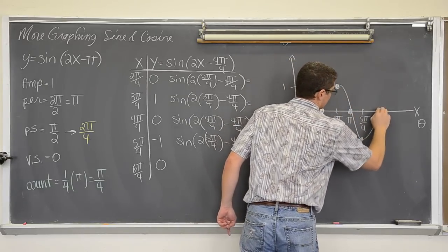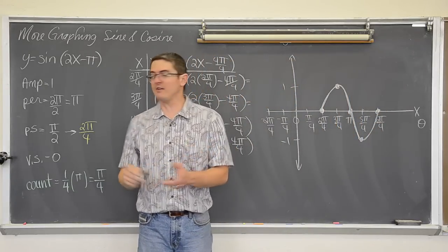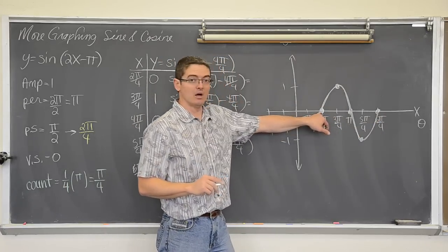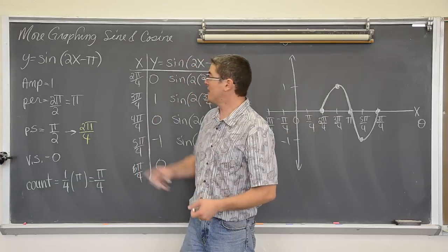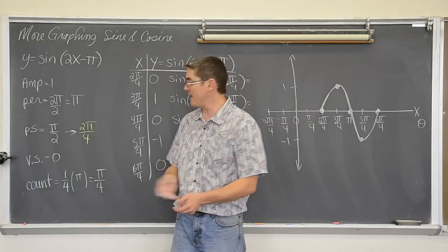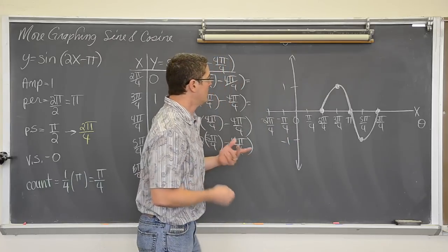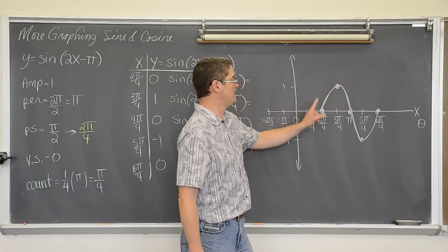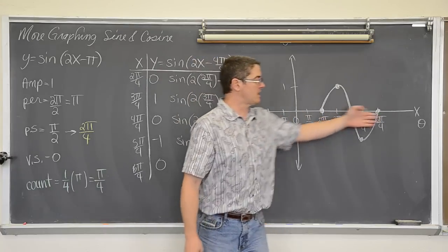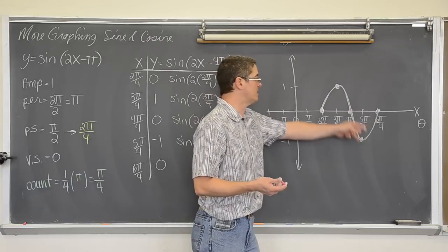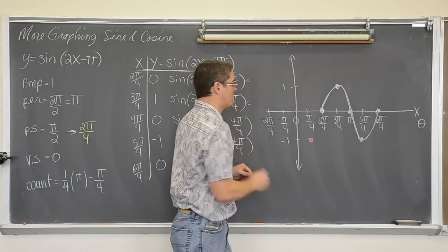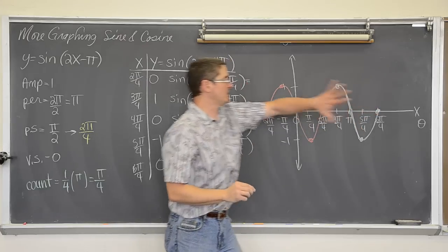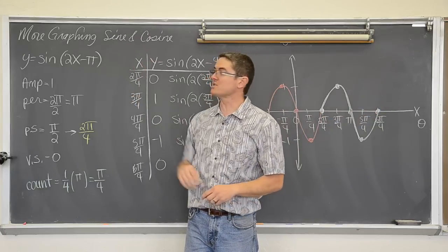The regular y equals sine of x parent function starts its oscillation at zero. This one starts at 2π over 4 because there is a phase shift of π over 2, and 2π over 4 reduces to π over 2, so the graph is pushed to the side. To get two periods, I continue the pattern: zero, negative one, zero, one, zero, then negative one, zero, one, zero again — the same pattern re-stamped. And there are two periods of y equals sine of 2x minus π.